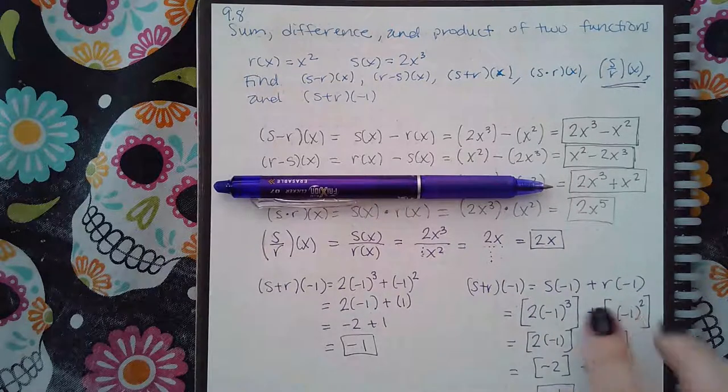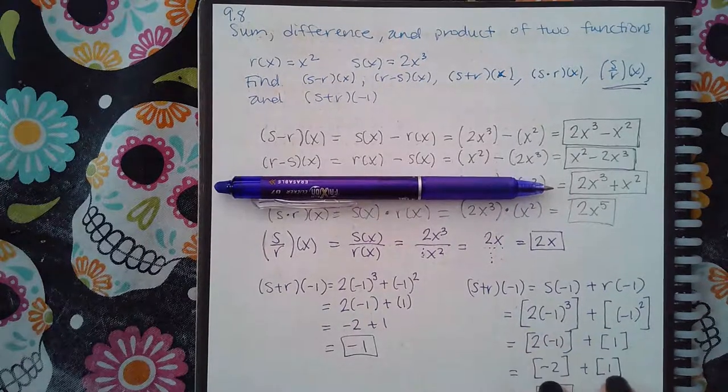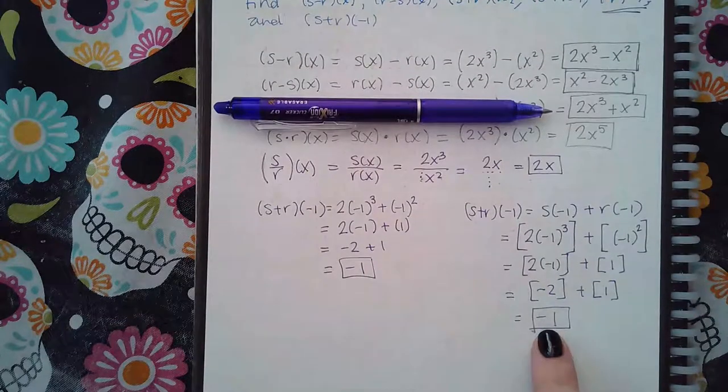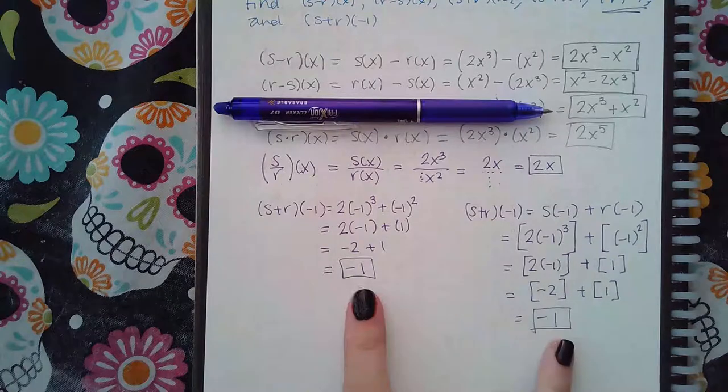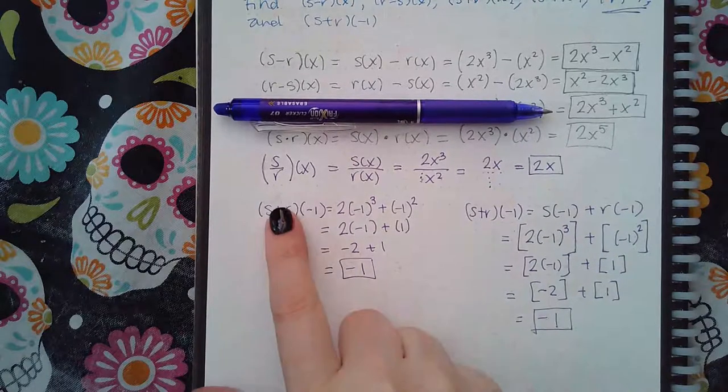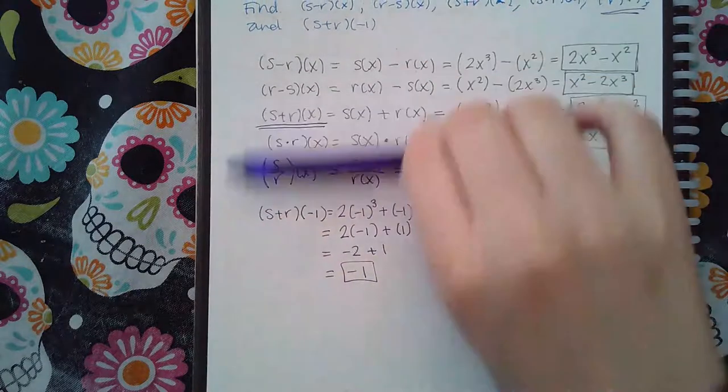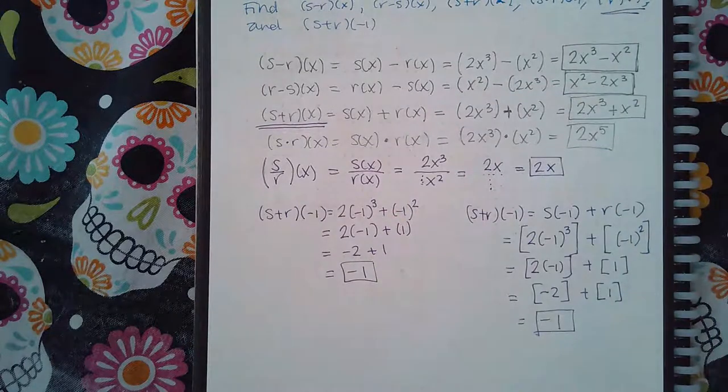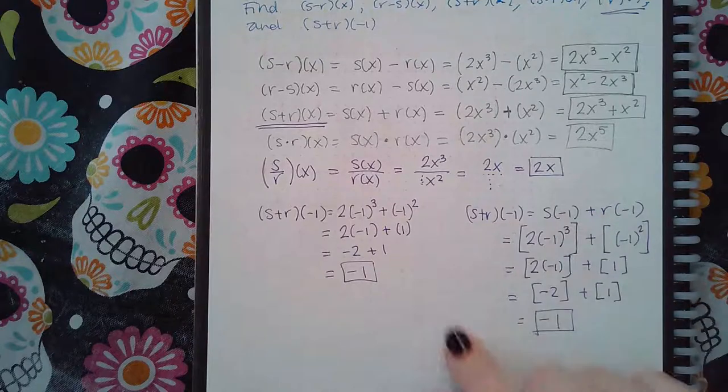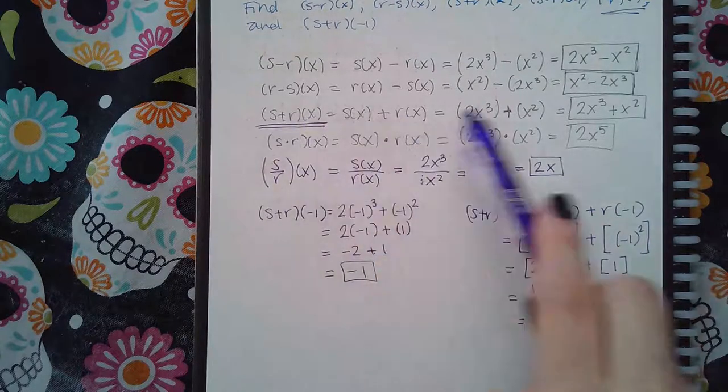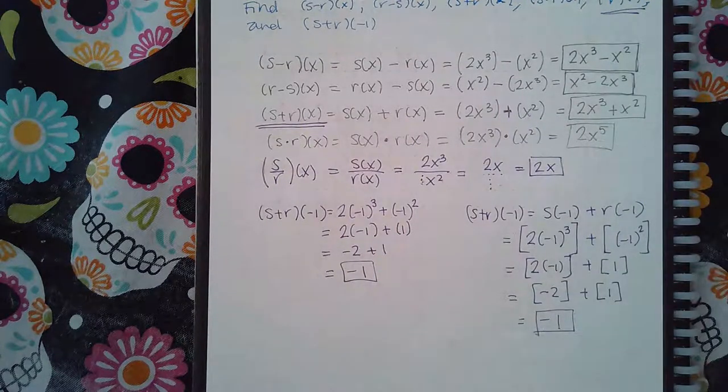Whichever method you're using, you're going to get the same value. So it's just a matter of: did you already figure out what (s + r)(x) was, or did you not do that? And then you have to do it the traditional method, just like the way you found (s + r)(x).